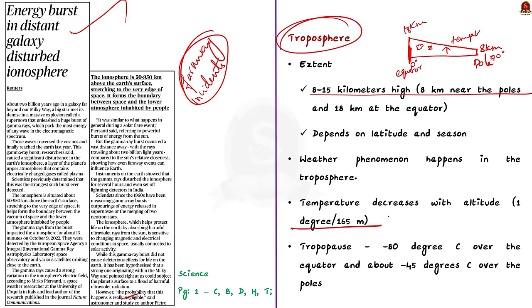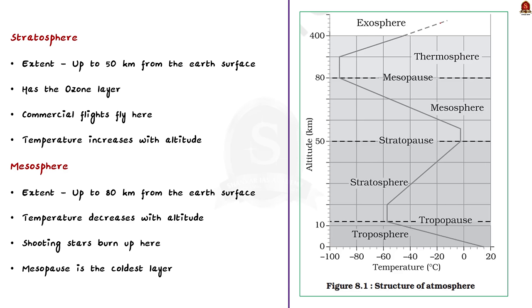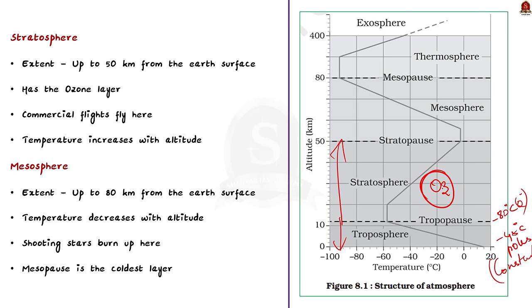After the troposphere, we have the stratosphere. Between the two lies the tropopause, where the air temperature is about minus 80 degrees Celsius over the equator and about minus 45 degrees Celsius over the poles. Temperature in the tropopause region is always constant. The stratosphere is located above the troposphere and extends up to a height of 50 kilometers above the Earth's surface. The stratosphere contains the ozone layer, which absorbs much of the sun's harmful ultraviolet radiation. This layer is where commercial aeroplanes fly due to its stability and lack of weather disturbances. Temperature gradually increases with altitude in this layer as the ozone absorbs the UV radiation.